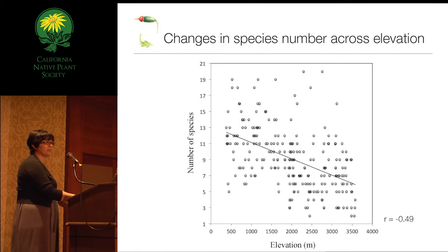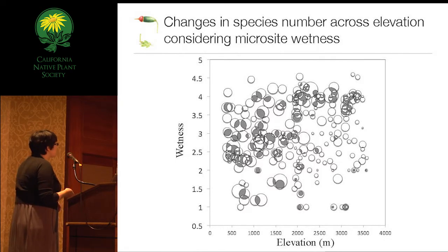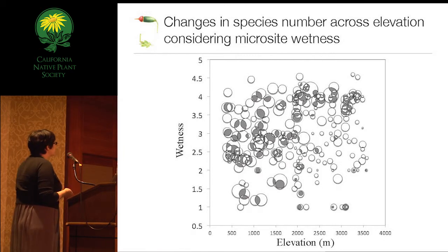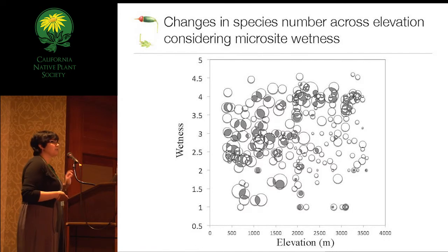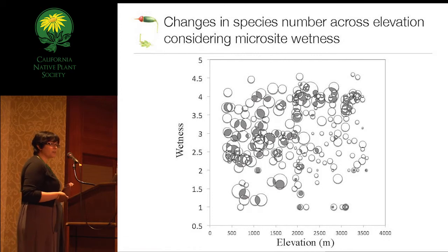What happens when we consider the wetness of the microsite? In this graph, every bubble is a plot, with elevation on one axis, wetness on the other, and species richness reflected in the size of the bubble—larger bubble means more species. Wetness was tailored to be bryophyte-specific: it's not the wetness at the time of sampling, but the capacity of the microsite to dry out. A plot scoring around four had bryophytes mostly in microsites remaining consistently wet for at least a season, like a stream bank. A score of two meant bryophytes were in places that dried very quickly, like an exposed rock outcrop.